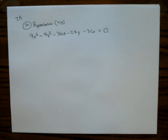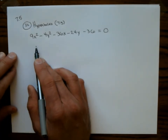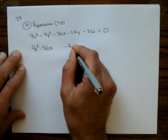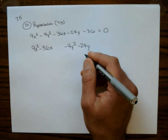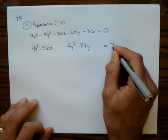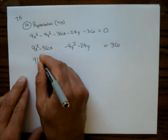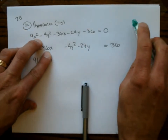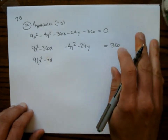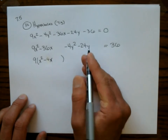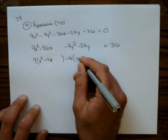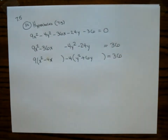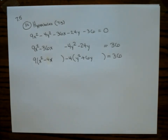Group the x and y terms and move negative 36 to the right side, making it 36. Factor 9 out of the x terms, giving x squared minus 4x with a space. Factor negative 4 out of the y terms, giving y squared plus 6y with a space. Now complete the square inside each set of parentheses, similar to the ellipse problem. This sets up the standard form of the hyperbola equation.